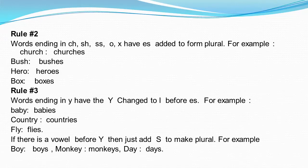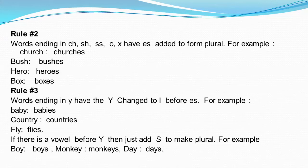Continuing Rule 2 examples: hero — heroes, box — boxes. Rule 3: Words ending in Y have the Y changed to I before ES. For example, baby — babies, country — countries, fly — flies. If there is a vowel before Y, then just add S to make plural. For example, boy — boys, monkey — monkeys, day — days.